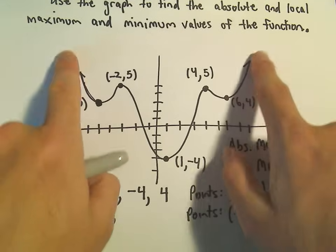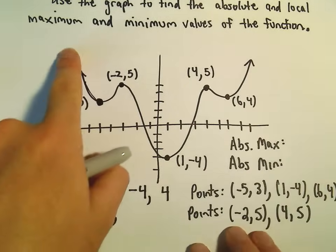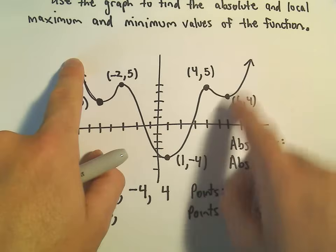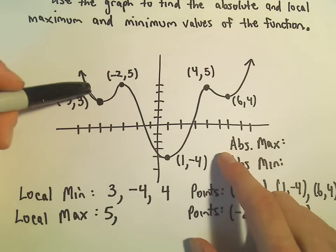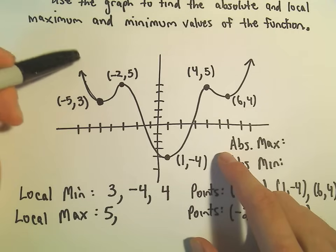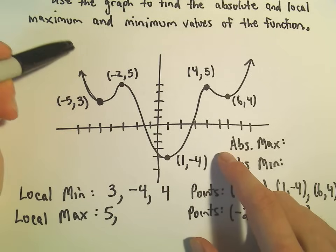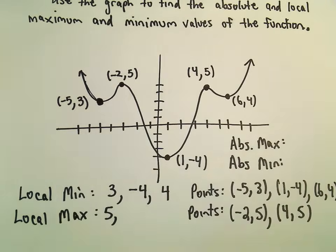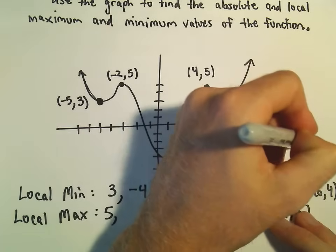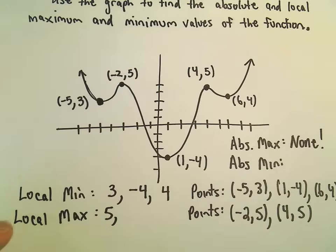Well, it looks like my function, since it keeps going up forever and ever and ever on either side, in that case there's really not an absolute maximum, because the y values always get bigger, bigger, bigger, bigger, so there's no top, no biggest y value.